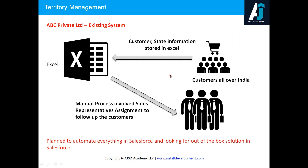The problem is their existing system. Currently, there is no automation — they are keeping an Excel sheet. When a customer from a particular state inquires about car accessories, their information is manually recorded in the Excel sheet, and sales reps need to follow up. With many sales representatives, ABC Private Limited needs a way to assign customers to the right reps, which they are doing manually.